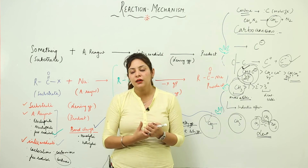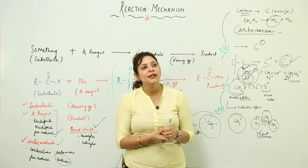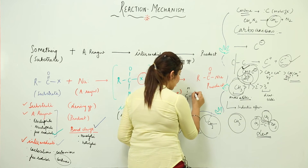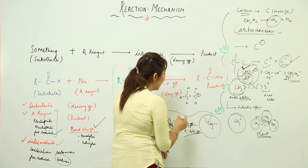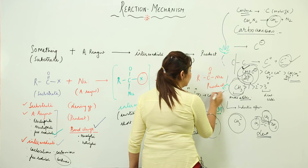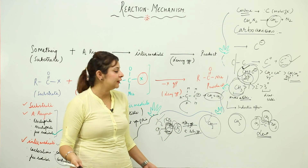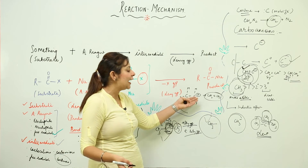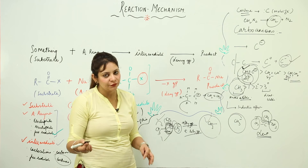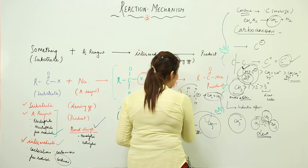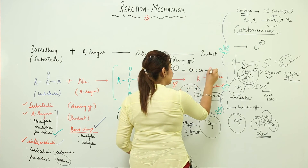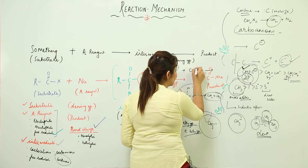A second type of reaction carbocations can undergo: suppose I have a carbocation — they can actually lose a proton, and after losing the proton they will form an alkene. For example, I took an ethyl carbocation, that is why it formed ethene. Similarly, carbocations can also react with an alkene. Because the alkene contains a pi bond, those pi electrons can open up and the carbocation can add to the alkene.